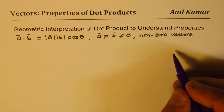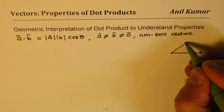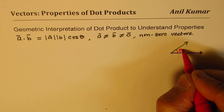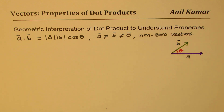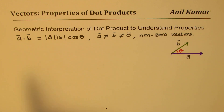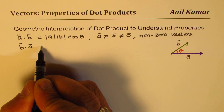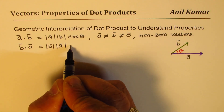Let me represent the vectors like this. This is my vector a, and let's take another vector b at an angle theta to it. The angle between them is theta. So when we write a·b as |a||b|cosθ, if I change the order and write b·a, it becomes the magnitude of b times the magnitude of a times cosine of theta.